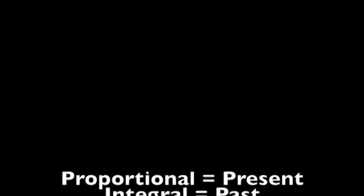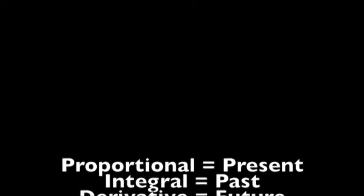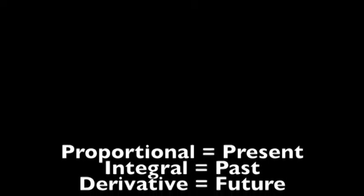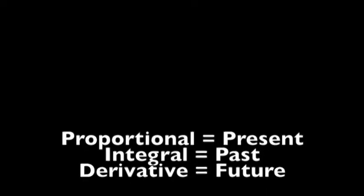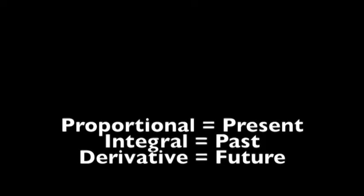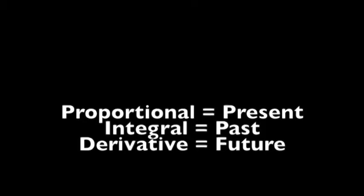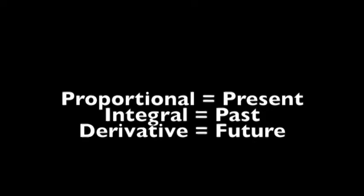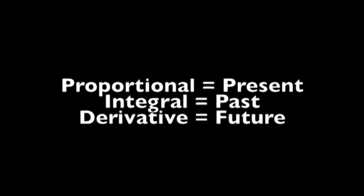PID stands for proportional, integral, and derivative. Basically what you're doing is putting values—your proportional, integral, or derivative values—into an equation and you're taking past and present values in order to predict the future. By being able to predict the future, ideally if you get all your values correct, you'll be able to keep your system stable.